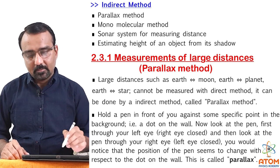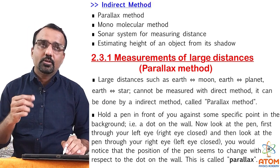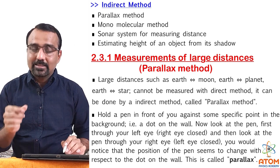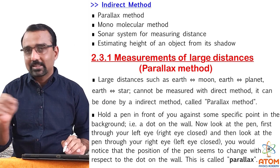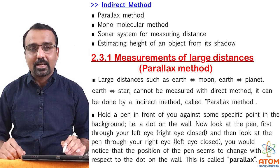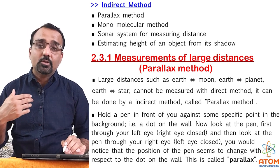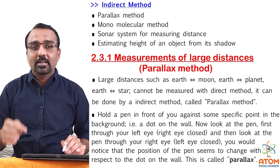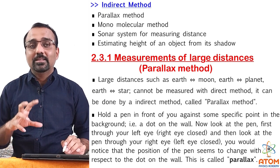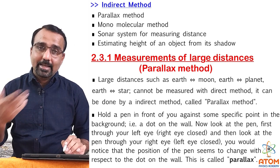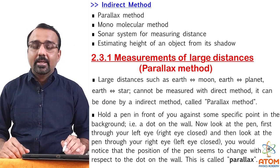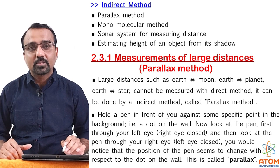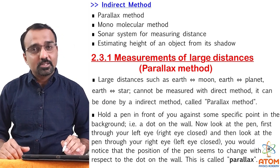Let us see the indirect method. In the indirect method, the object is not near us, so we cannot measure the distance using instruments like meter scale or vernier calipers. Sometimes the object is very, very small — we cannot even apply vernier calipers or micrometer screw gauge. So in this method, we have to use some indirect methods. We use many equations of physics, trigonometry sometimes, and some estimation methods.